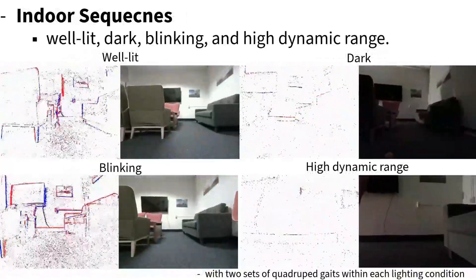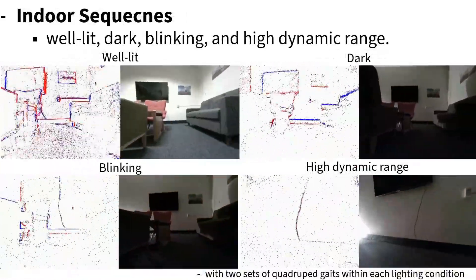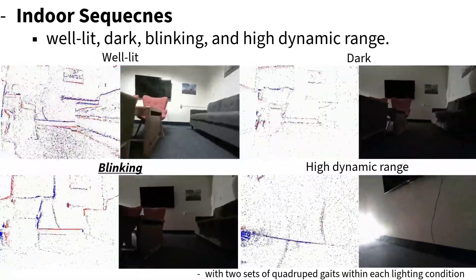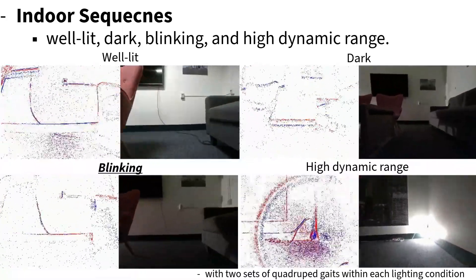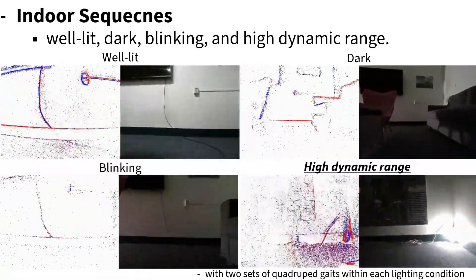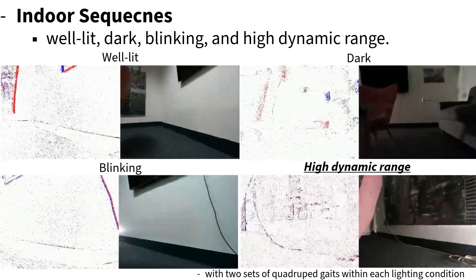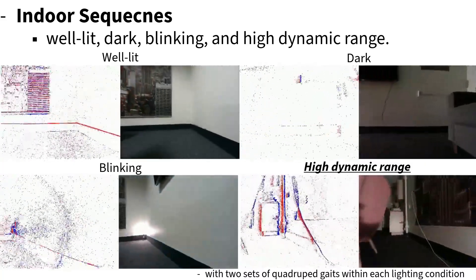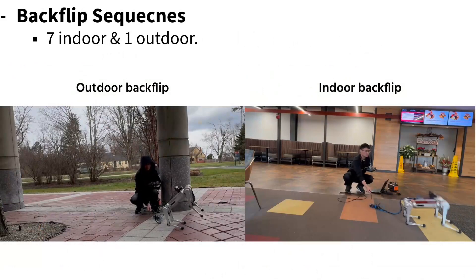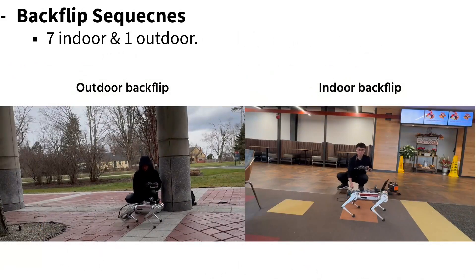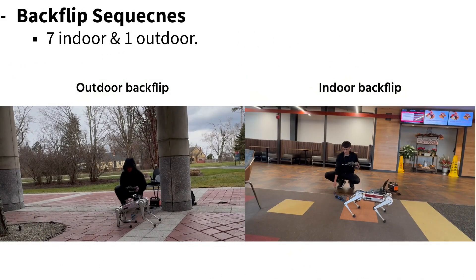For indoor sequences, we included four different lighting conditions. The blinking condition is created by repeatedly turning the light on and off, while the high dynamic range is achieved by introducing a light source in a dark environment. Additionally, the dataset features eight highly dynamic backflip sequences.